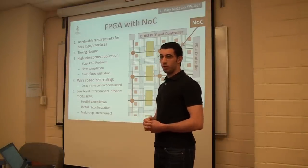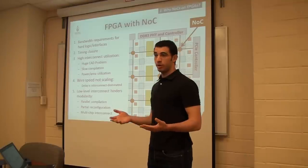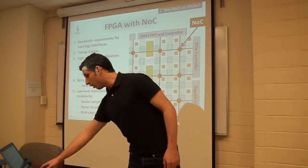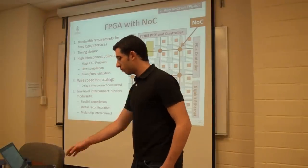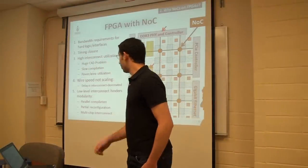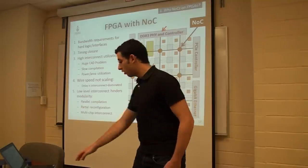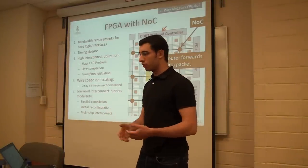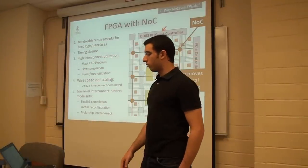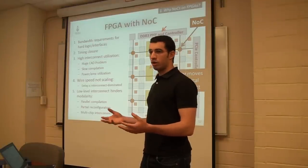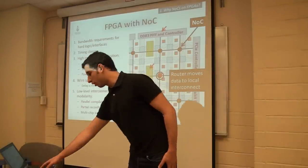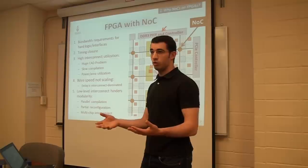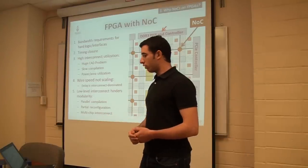We think these superhighways should be implemented as networks on chip for the FPGA, composed of routers and links. If you want to move data from external memory to a logic block, it travels on fast links, the first router decides where it goes next, and then it takes an off-ramp from the network back onto normal interconnect to reach the destination block.